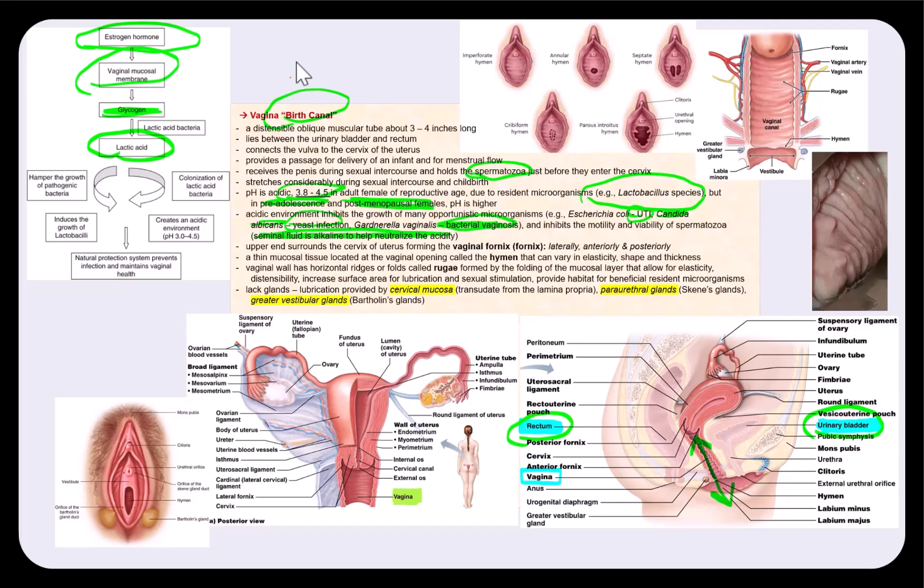these lactobacilli will metabolize the glycogen, producing lactic acid. Now, if we look at the upper end of the vagina, it surrounds the cervix of the uterus and forms what's called the vaginal fornix, or simply fornix. So it's found laterally, anteriorly,